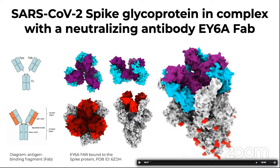A specific antibody called EY6A, retrieved from an individual convalescing from COVID-19, was shown to neutralize SARS-CoV-2 and cross-react with SARS-CoV-1. The viral spike glycoprotein complex identifies a highly conserved epitope away from the ACE2 receptor binding site, and residues within this footprint are key to stabilizing the pre-fusion spike. How effective this will be is an open question, because the regulation of how the spike protein opens up and how different portions are accessible and recognizable will play a role in how this evolves over time.